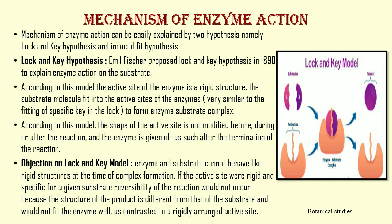There is one objection to the lock and key model: enzyme and substrate cannot behave like a rigid structure at the time of complex formation. If the active site were rigid and specific for a given substrate, reversibility of the reaction would not occur, because the structure of the product is different from that of the substrate and would not fit the enzyme well, as contrasted to the rigidly arranged active site.